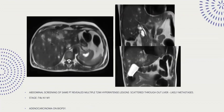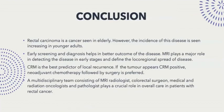Adenocarcinoma was diagnosed on biopsy. Conclusion: Rectal carcinoma is a cancer seen in the elderly; however, its incidence is increasing in younger adults. Early screening and diagnosis helps in better outcome of the disease. MRI plays a major role in detecting the disease in early stages and defining the local-regional spread. Circumferential resection margin is the best predictor of local recurrence. If the tumor appears to be CRM positive, neoadjuvant chemotherapy followed by surgery is preferred. A multidisciplinary team consisting of MRI radiologists, colorectal surgeons, medical and radiation oncologists, and pathologists plays a crucial role in the overall care of patients with rectal cancer. Thank you.